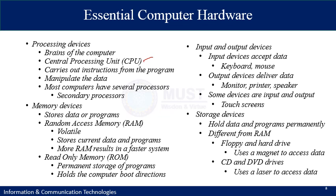Another essential part of computer hardware is memory devices, which store the data or the running program. There are two common types: Random Access Memory (RAM) and Read-Only Memory (ROM). RAM is volatile memory — it stores the current data and program, and once you turn off the power, the stored data and program will vanish. If you have more RAM it results in a faster system. Read-Only Memory is permanent storage of program and holds the computer boot directions, used in devices with stored programs.